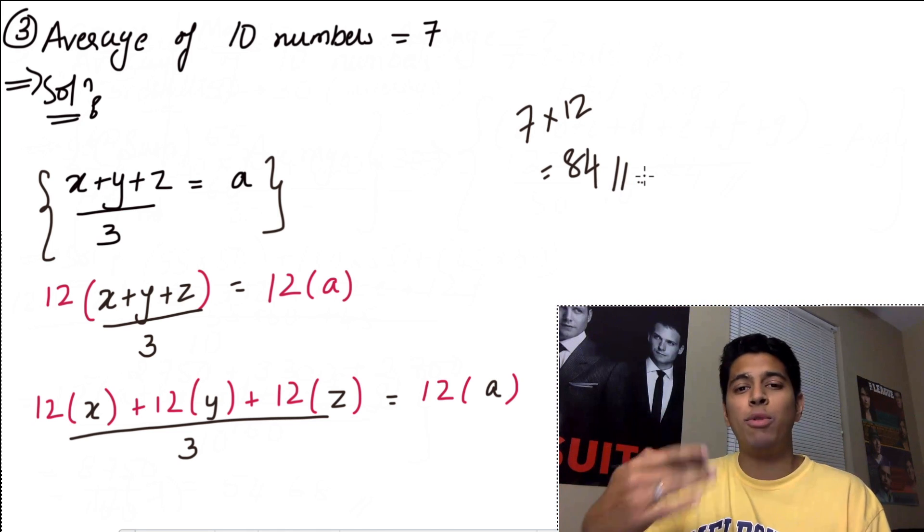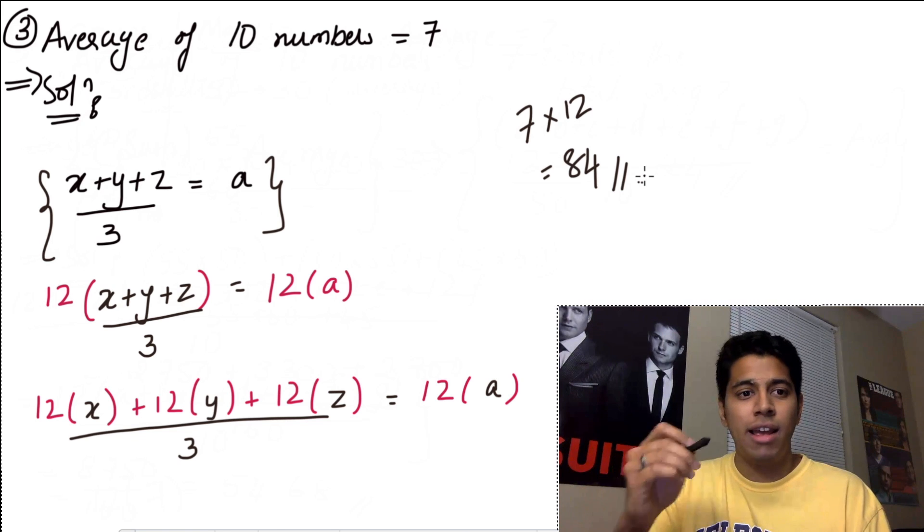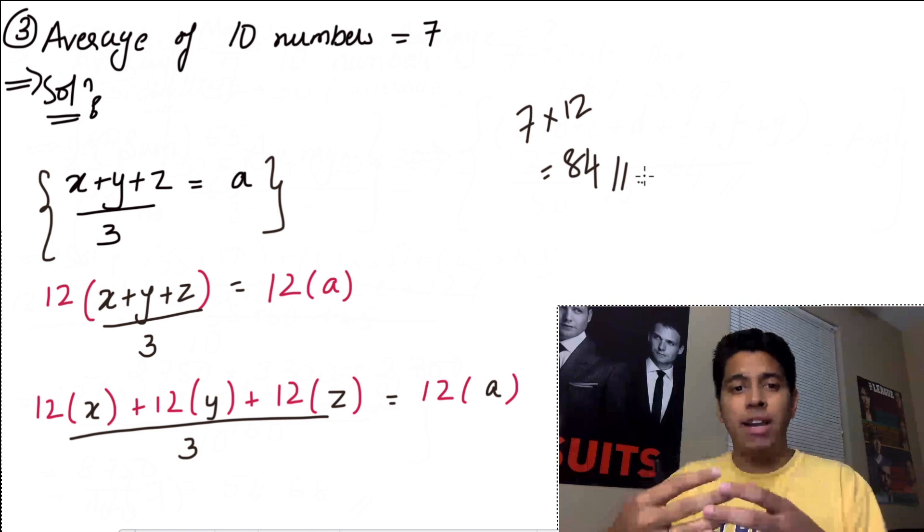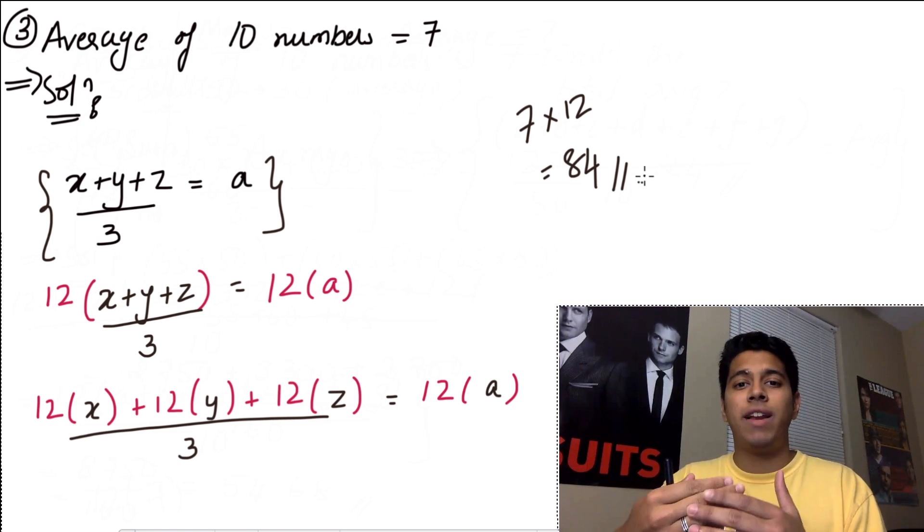So in the future, don't spend more than 5 seconds on sums like this. Understand what's happening exactly. All the numbers are being affected. Hence, the average should also be affected in the same way. So this was part 2 on lecture on averages where we've solved 3 basic problems and we understood what happens when you fiddle with all the numbers in a given set.